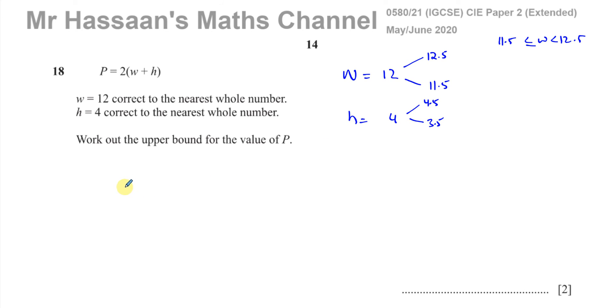So now the upper bound is going to be equal to two times... Now we have an addition here. So for addition, if you get the biggest possible value plus the biggest possible value, you get the upper bound for that calculation. So you have 12.5 plus 4.5, so that gives you two times 17, which is 34.